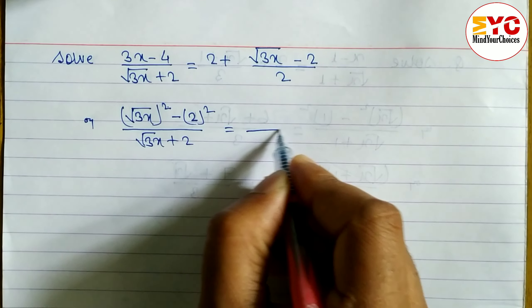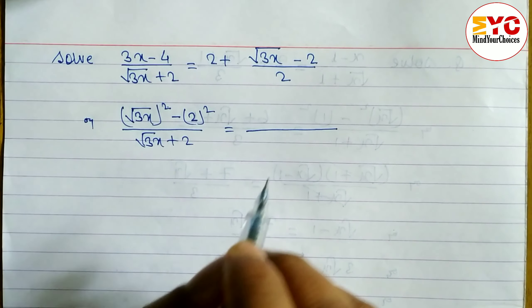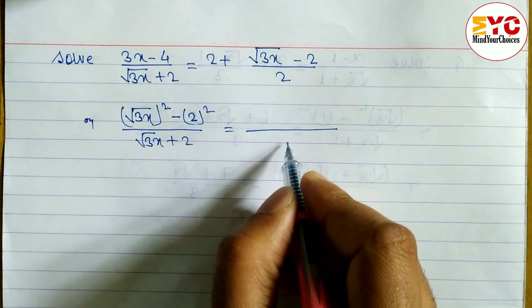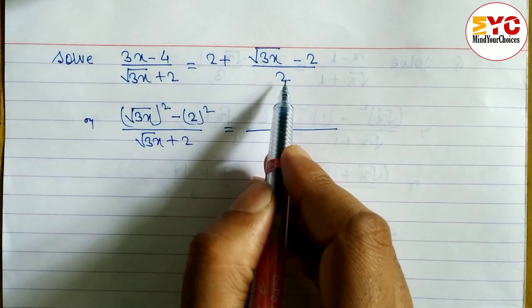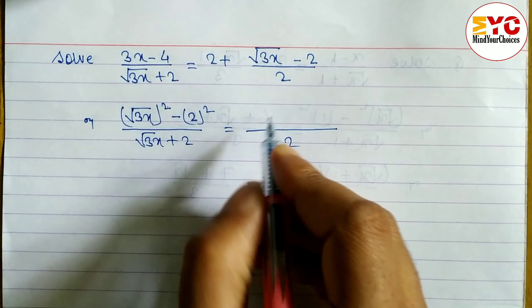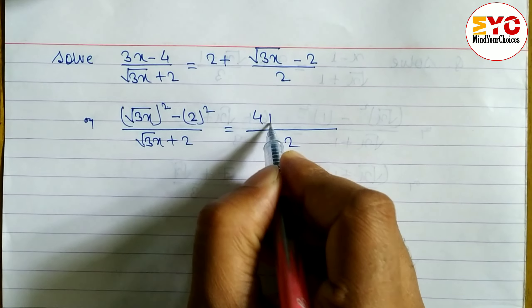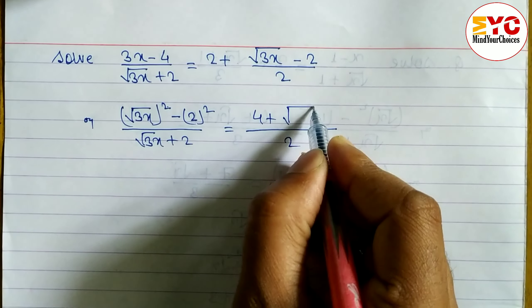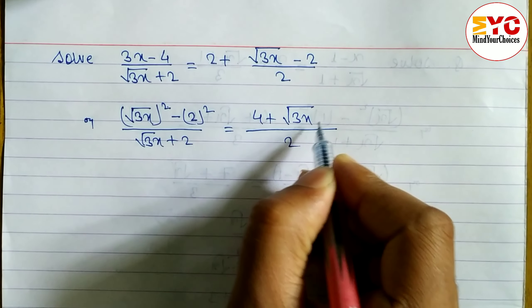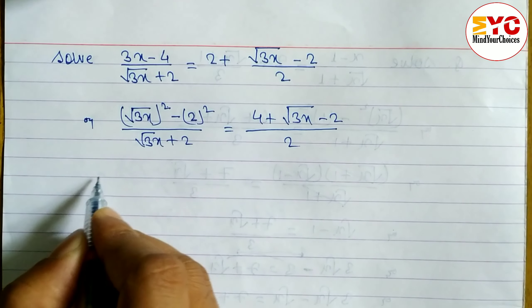On the right side, we have to take the LCM. The LCM is 2, so we write 2 into 2, giving us 4 plus √(3x) minus 2.